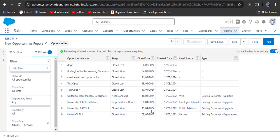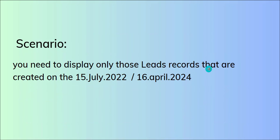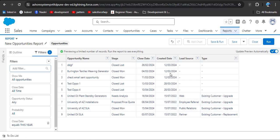This is how you can use relative date filter in Salesforce. Now we will see the second scenario: display only those lead records that were created on 15th July 2022 or 16th April 2024. To display records created on a specific date, we need to apply a hard-coded date. We will implement this scenario in Salesforce Classic.